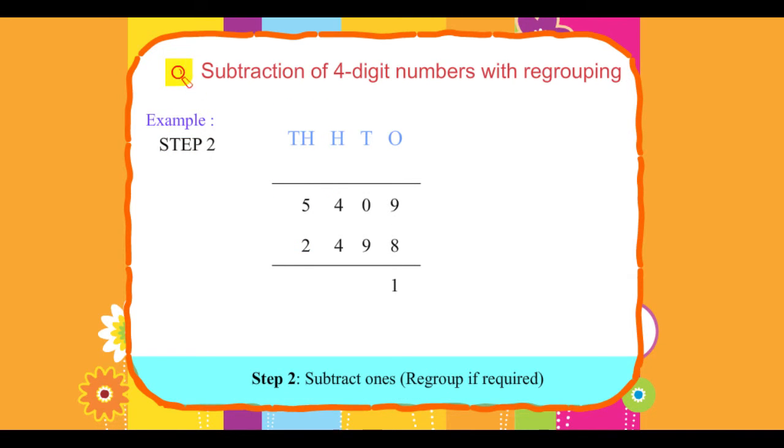Step 2: Subtract ones. Regroup if required. Nine ones minus eight ones equals one one.